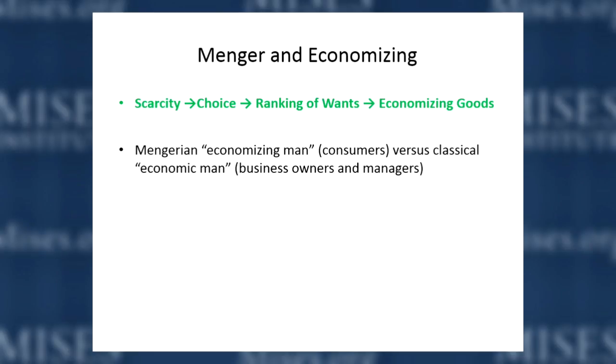In Menger's Principles, we see the sequence familiar from intro economics: we start with scarcity of things to serve human wants; we have to choose between them because we have scarce money resources; in order to choose we rank them as more or less important to our welfare; and then we economize, using resources only to satisfy the most important wants. Menger replaced homo economicus — the business decision maker — with what he called the economizing man: the consumer striving to satisfy his or her wants.